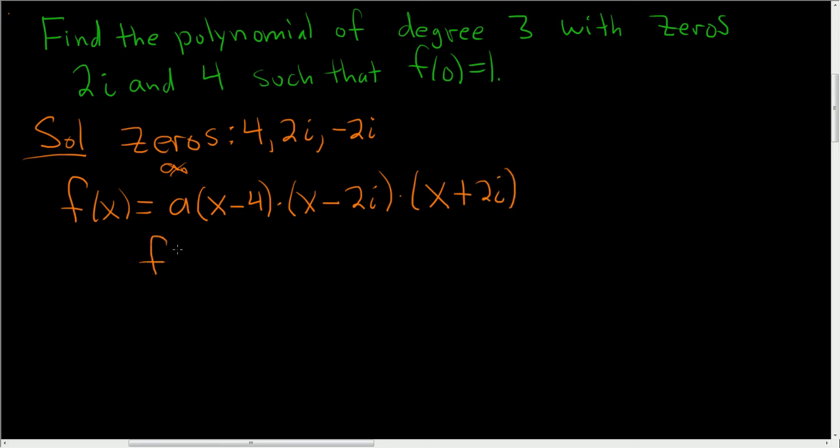The next step is to clean it up. So f(x) equals a times x minus 4. And at this point we can use a formula.